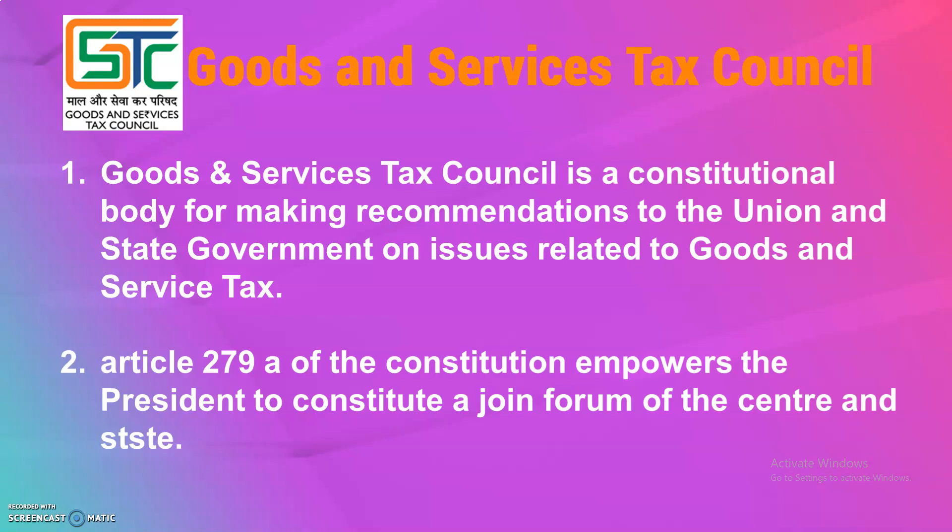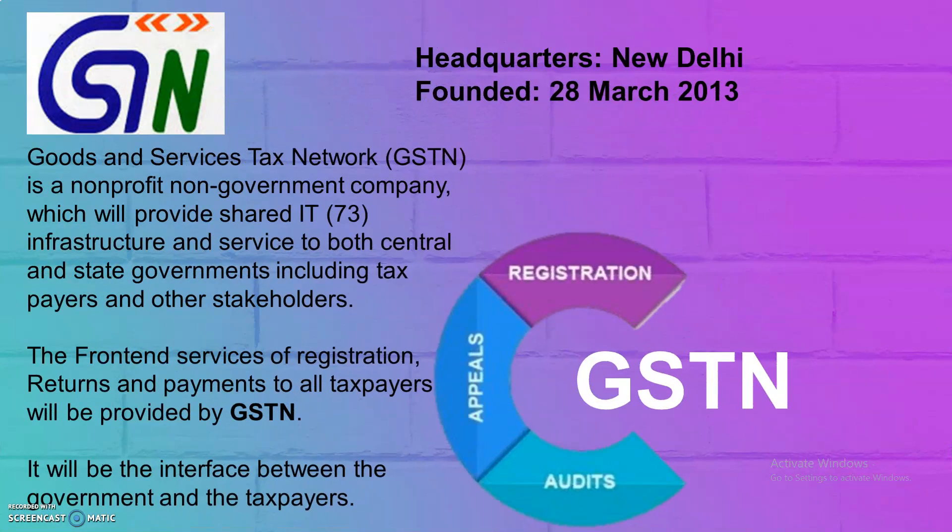Article 279, subsection A, clause 1 of the Constitution empowers the President to constitute a joint forum of the Centre and States. This forum is constituted by the President and consists of people from both the central and state departments.